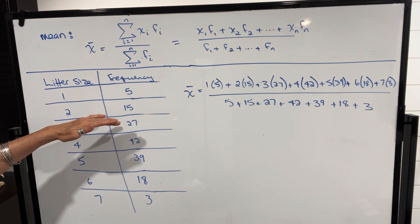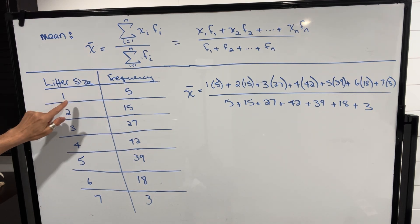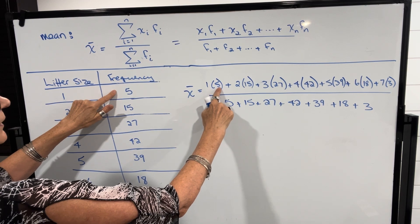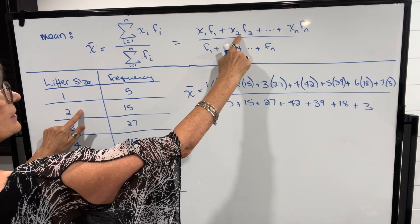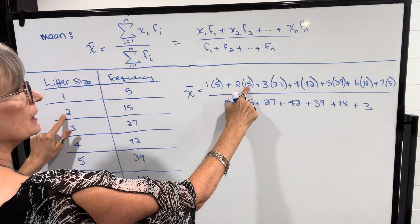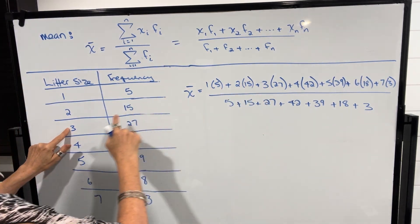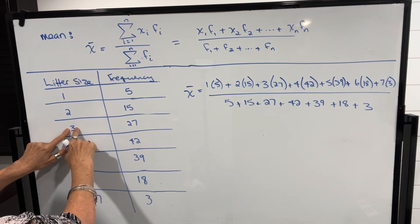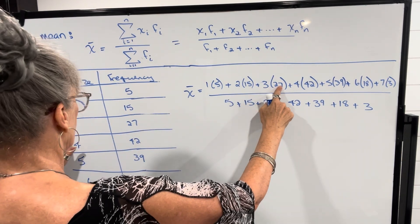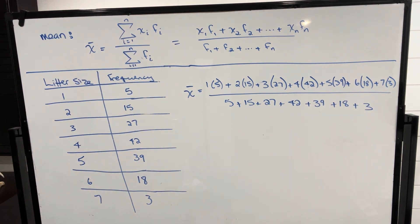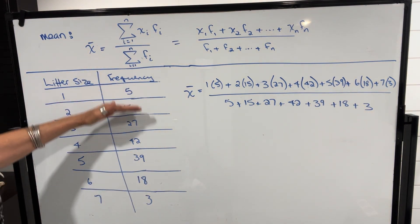So in this example, if I want to calculate the mean, I take x1 times f1, so 1 times 5, plus x2 times f2, so 2 times 15, and so on. So there were 27 foxes that had a litter of 3, so 3 times 27, and so on.